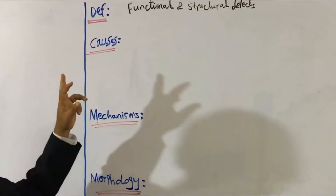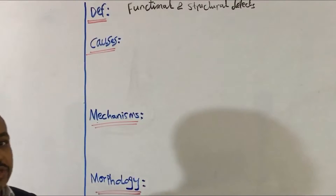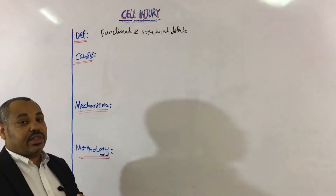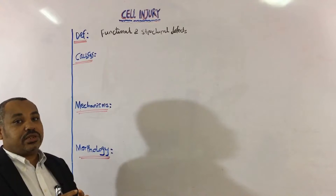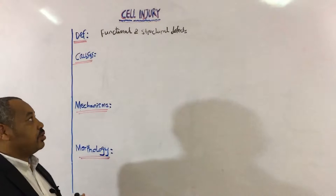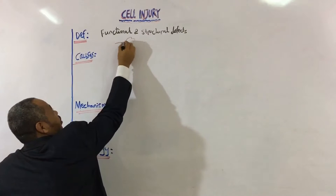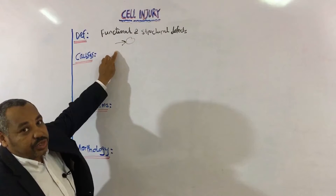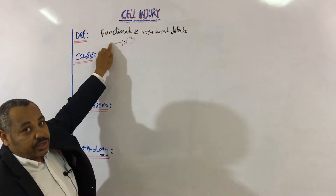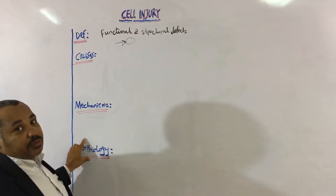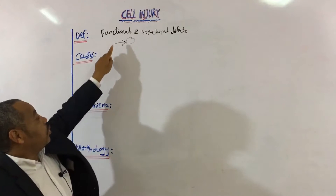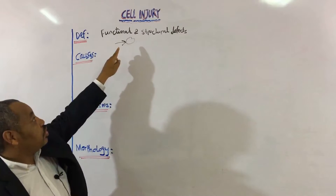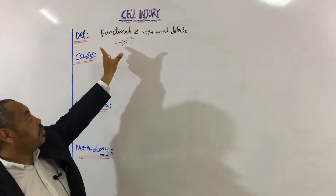Let us start with the first point: the definition of cell injury. Cell injury is a series of functional and structural defects that take place within the cell due to stress on this cell. If a cell is subjected to specific stress — whether mild, moderate, or severe — morphological changes will take place according to the degree of that stress. This is called cell injury.